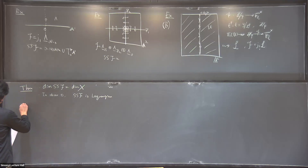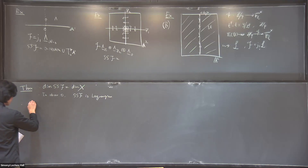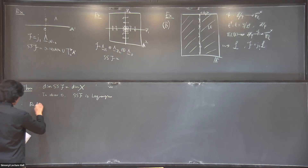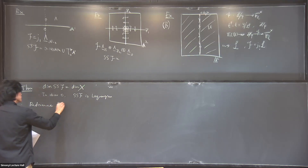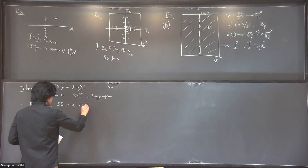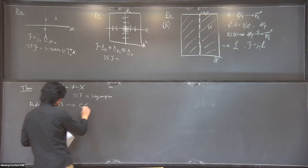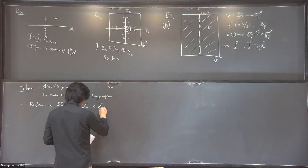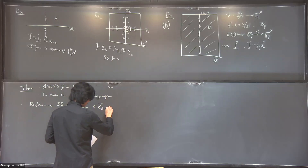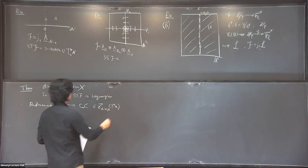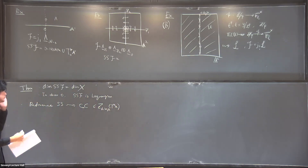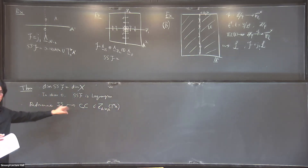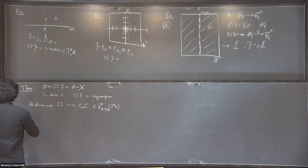Part of my work is to further understand this analogy and to extend this micro-local point of view to the analytic context. There is a further refinement of the notion of singular support to a characteristic cycle — a cycle in the cotangent bundle where you add integer coefficients to the components of the singular support data. It includes further information.